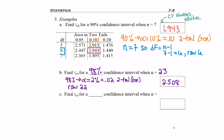And for my last example, a 99% confidence interval when n is 58. Why don't you pause and try that one on your own?